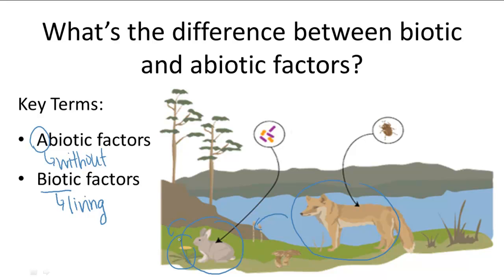Abiotic or non-living factors include things like temperature, oxygen supply, sunlight, the presence of water, and soil type. All these are abiotic factors.